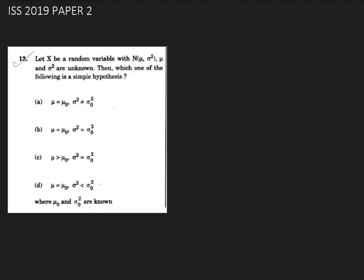In this question we are given that let X be a random variable which follows normal(μ, σ²) where μ and σ² both are unknown constants. Then which one of the following is a simple hypothesis — we need to find.